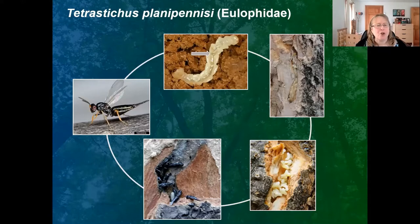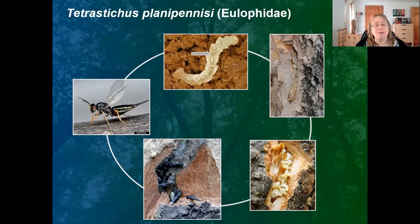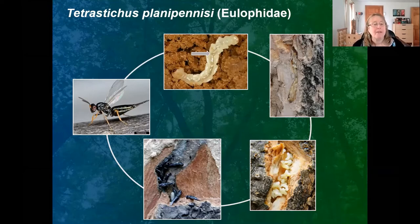This is the life cycle of Tetrastichus — it is an endoparasitoid. It sticks its ovipositor through the bark and lays its eggs inside the emerald ash borer larvae. You can see tiny larvae swimming around inside the hemolymph of the EAB larva. These parasitoid larvae eventually totally consume the emerald ash borer. They then burst forth with naked pupae — they don't spin cocoons like some species — and start the cycle over again, having up to three or four generations per year.